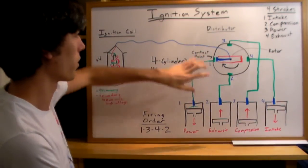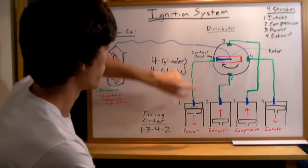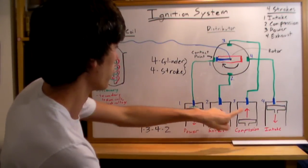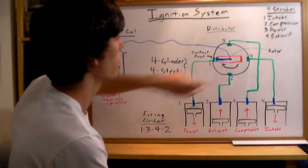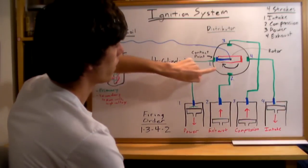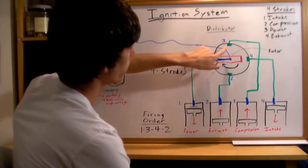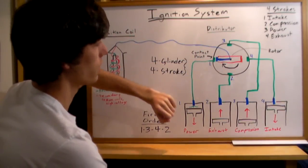The distributor is what distributes the voltage to each of the cylinders, to each of the spark plugs. You're going to have a high voltage coming in and you're going to have this rotor here that's going to be spinning around. In this rotor, there's contact points every 90 degrees. This is for a four-cylinder, four-stroke engine.